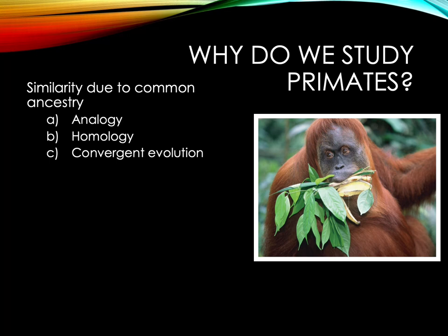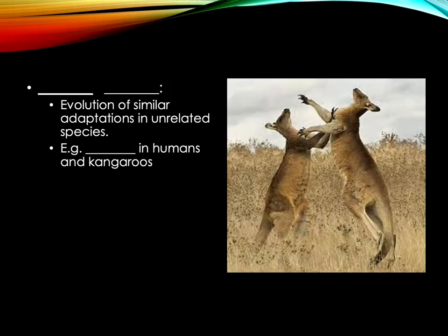That's actually not the same understanding that we have for gorillas and chimpanzees, which is discussed in Chapter 4. Analogy is a comparison between two things, typically for the purpose of explanation or clarification — for example, bipedalism in humans and kangaroos. Bipedalism evolved separately in these two because they're not genetically closely related and don't share a common bipedal ancestor. This is the evolution of a similar adaptation in unrelated species — convergent evolution.